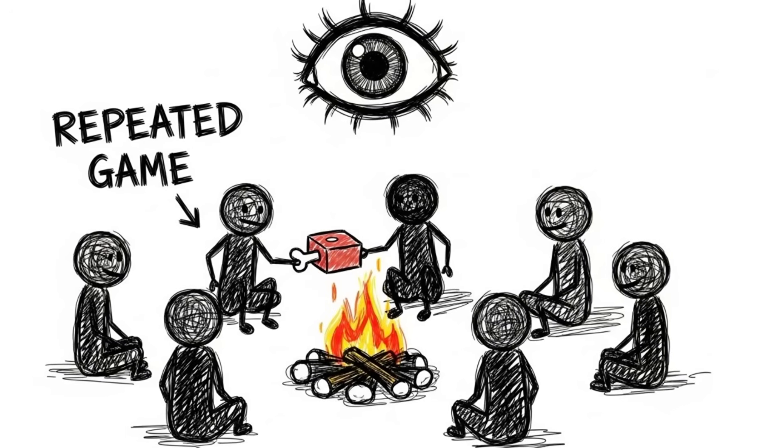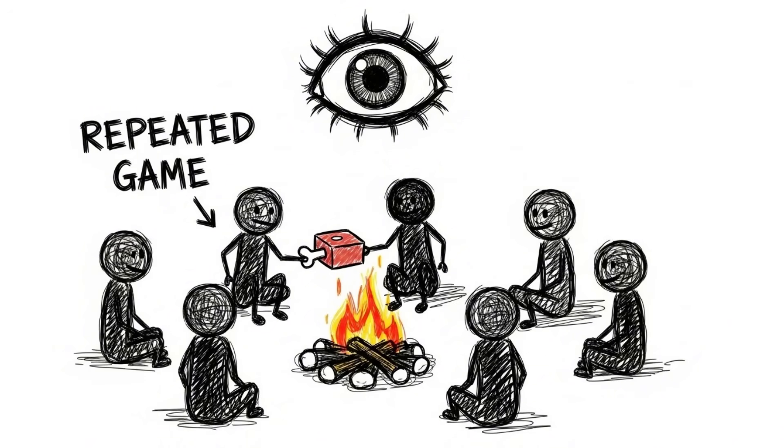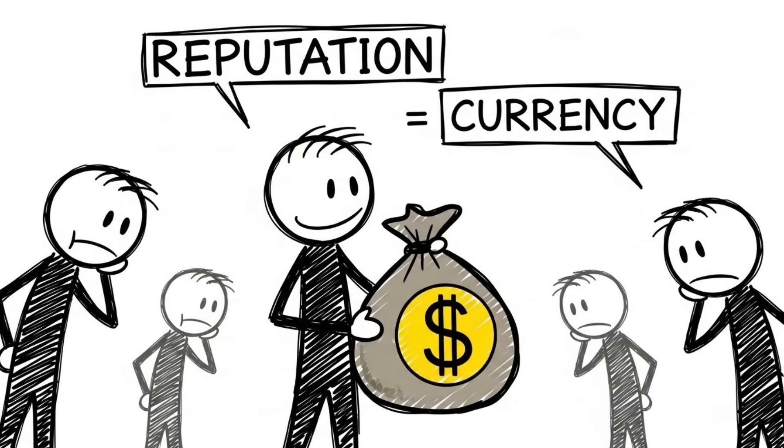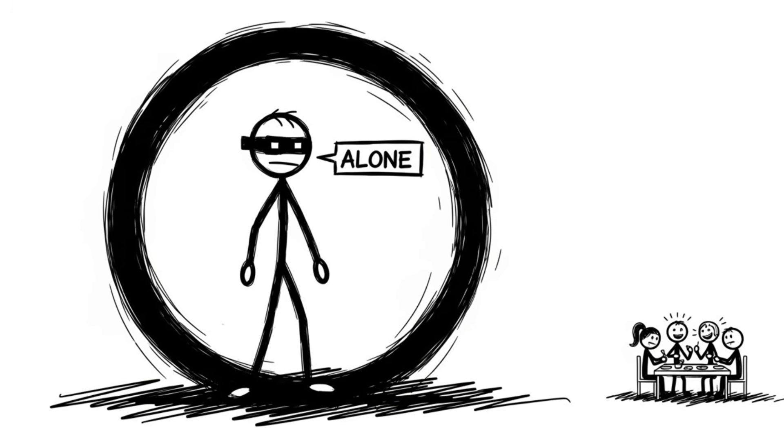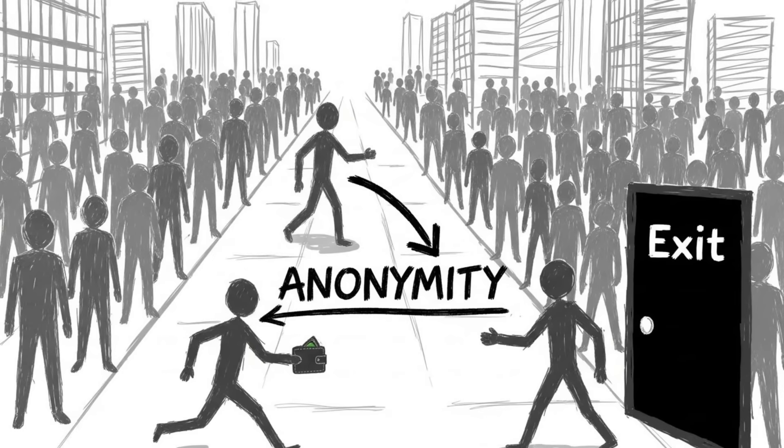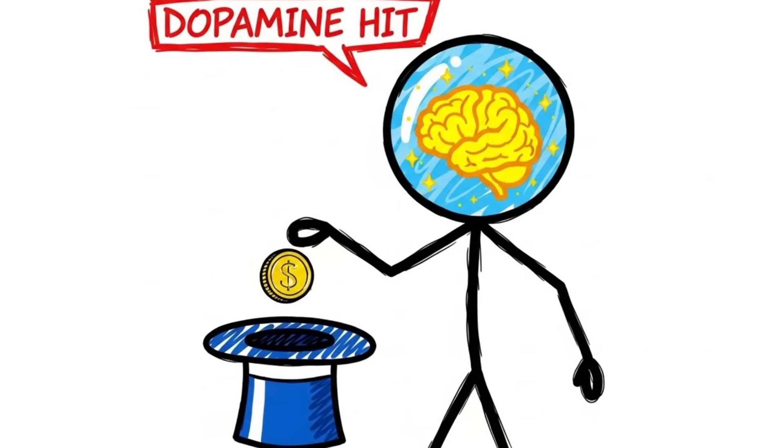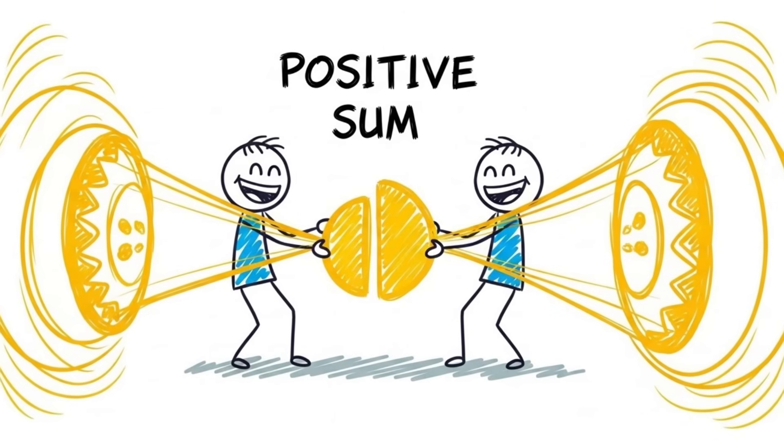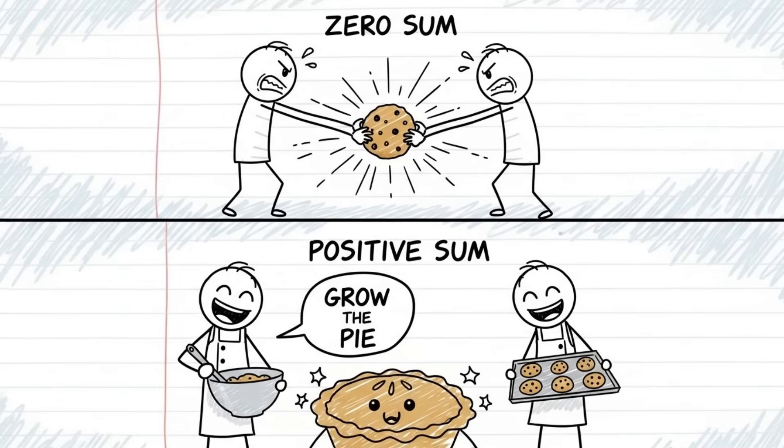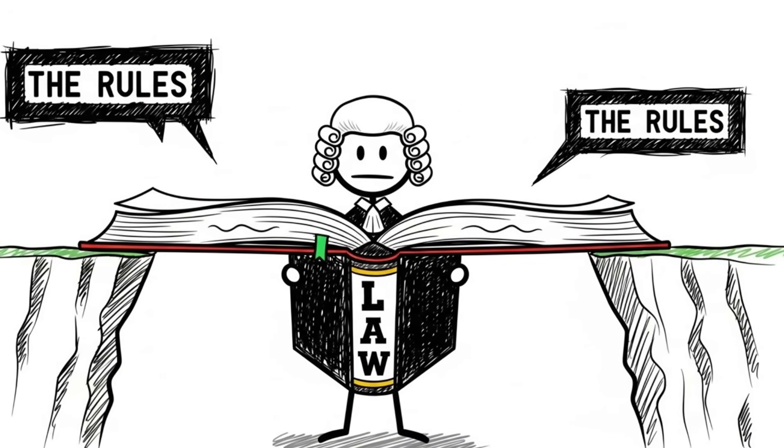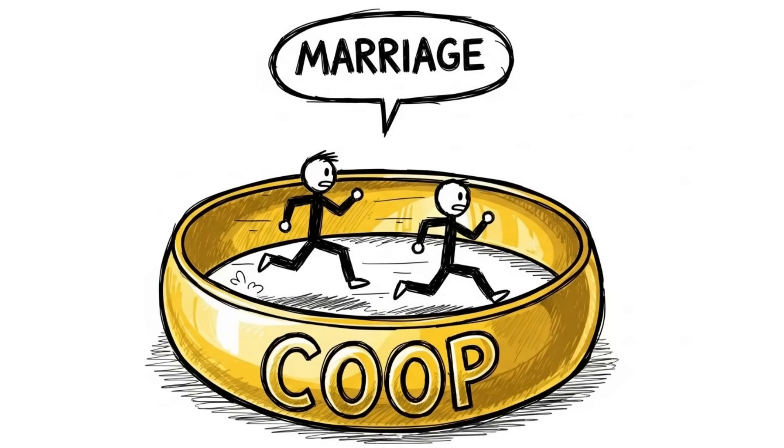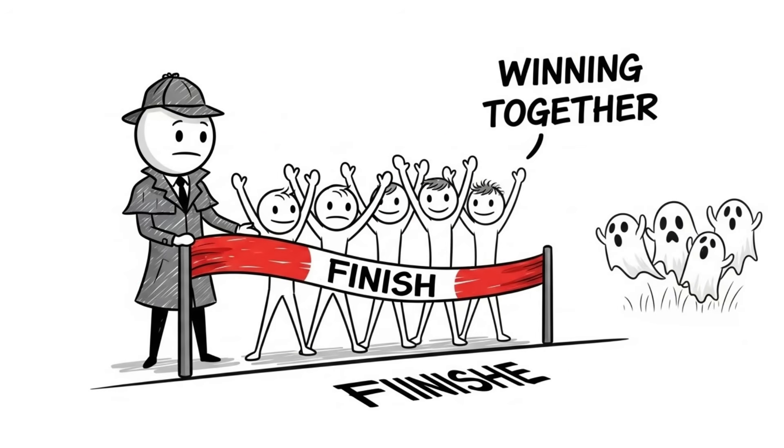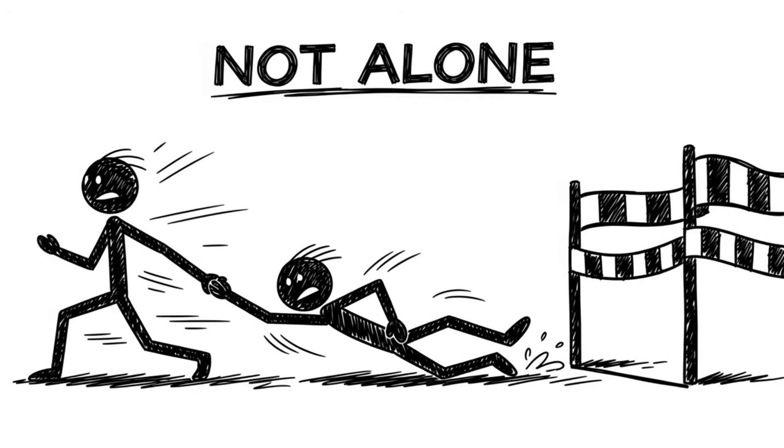But for strangers, we rely on the shadow of the future. We cooperate because for most of human history, we lived in small tribes where you would see that waiter again. You would see that stranger again. Our brains evolved in a setting where every interaction was a repeated game. Reputation was currency. If you cheated someone, the whole tribe knew and you died alone. In the modern world, we are anonymous. We can cheat and disappear. But our hardware hasn't updated. We still get a dopamine hit from cooperating. We still feel guilt when we cheat. We are biologically designed to play a positive-sum game, a game where, by working together, the total pie gets bigger for everyone. The ultimate lesson of game theory isn't that people are selfish. It's that we are smart enough to build systems, laws, cultures, marriages, that make cooperation the most selfishly beneficial move. We beat the math by changing the rules. We win by realizing that in the game of life, the only way to truly finish first is to make sure you aren't playing alone.